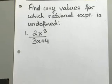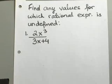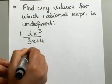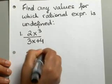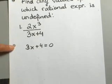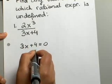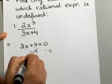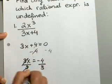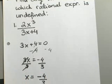What we are trying to do here is find any values for which the rational expression might be undefined. As our steps said, let's go ahead and take our denominator and set it equal to 0. You can see you formed this equation — go ahead and solve for x. I'll start by moving my 4 over to the other side: 3x equals negative 4. Then you divide by 3.